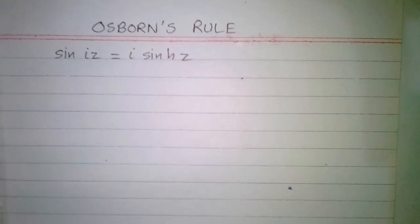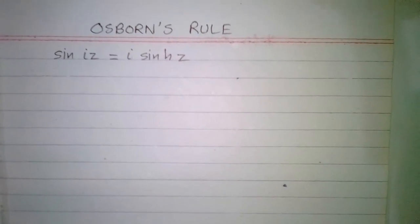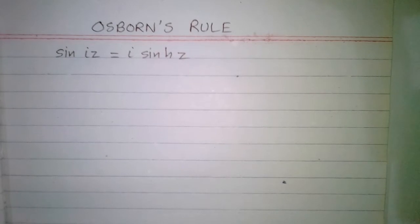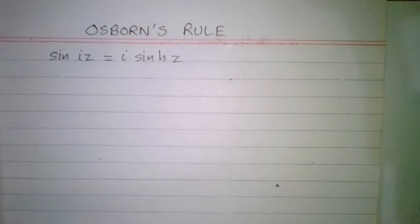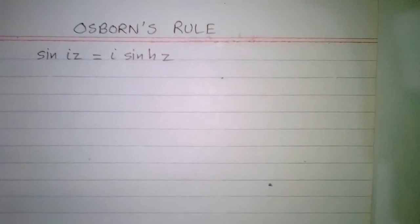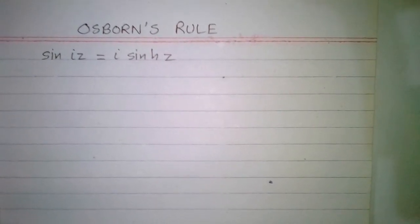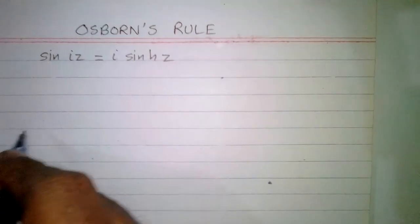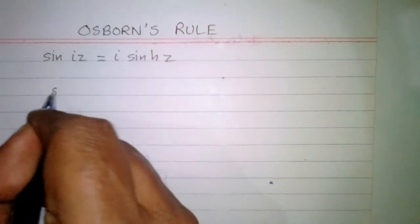In this video we will prove that sine of iota z is equal to iota times hyperbolic sine of z, where z is a complex number. This identity is also called Osborn's rule.